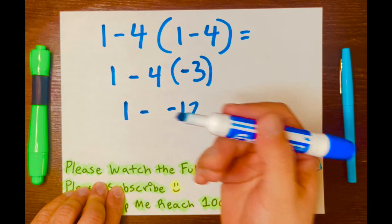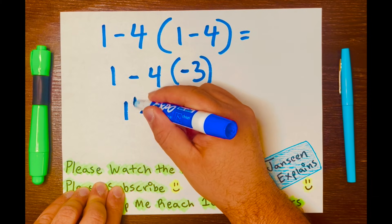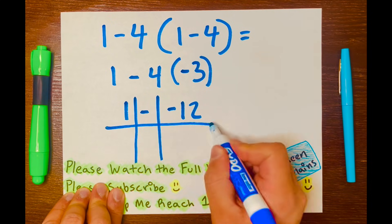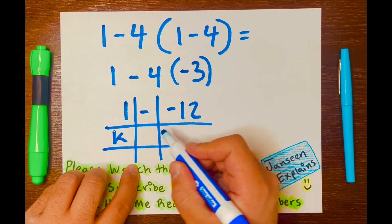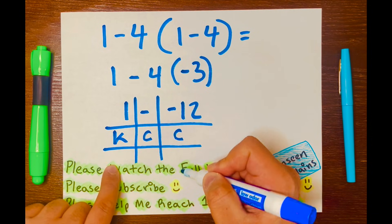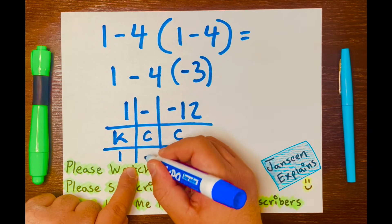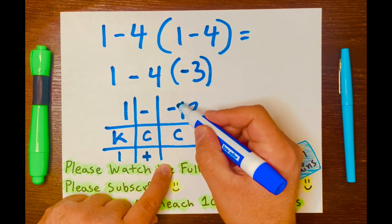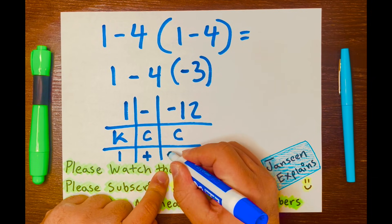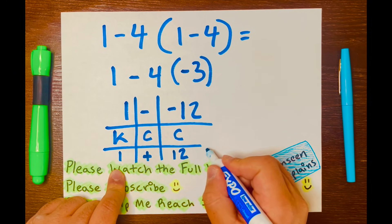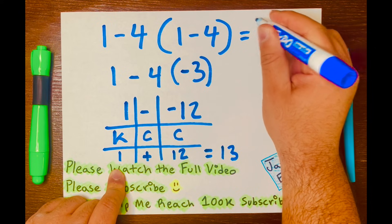So I like to use this chart. It's called a keep change, change chart. So what I'll do is I'll draw a line going down like this. And to remind myself, K means keep, C change, and then C change. So we keep the 1, we change the subtraction to addition, so it's a plus, and then you change the second number to its opposite. So it'll be a positive 12 or just 12. And all you have to do is just add 1 plus 12 equals 13. So your answer is 13.